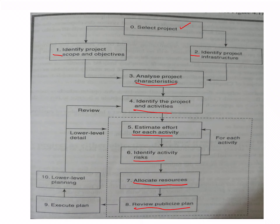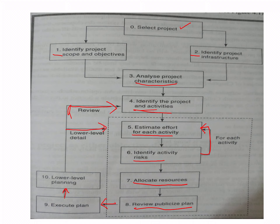Then step eight: review and publicize the plan — steps five through eight are put in a box because this is an ongoing process. For each activity you identify risk, go back and re-estimate efforts, then execute the plan. Step ten is lower level planning, after which you again go back to identify products and activities, and lower level details feed back into the effort estimates. This is the diagram you are expected to draw.